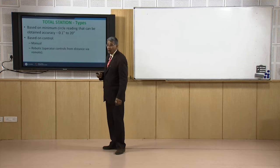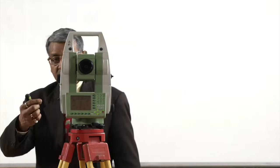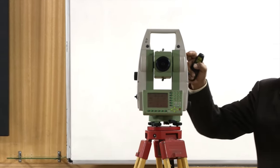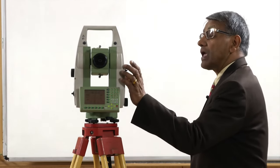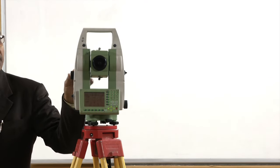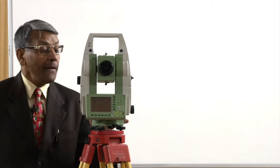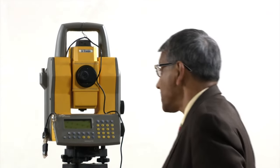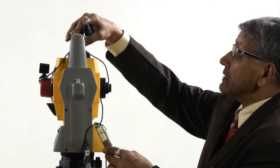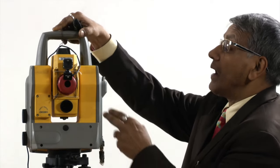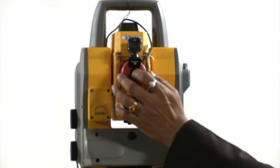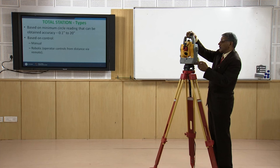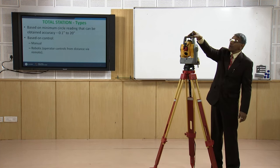I would like to now show different types of total stations. This is one variety of total station having an accuracy of one second — that means this total station can read up to one second. This is one more variety, the robotic total station, which rotates on its own through a motor and, using the sensor, it will rotate automatically to find out the sensor and take the reading. This is a robotic total station.